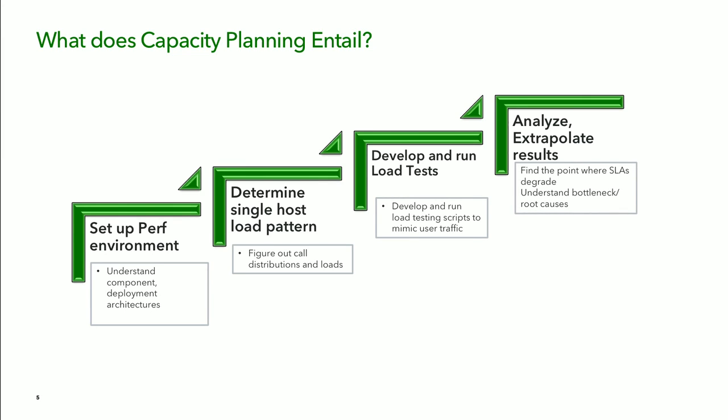The next step I want to go over is what does capacity planning actually entail. I'm trying to break it down into just four high-level simple steps and then we'll go over each in the subsequent slides. At the very first, you want to have a performance environment set up which mimics your production environment to the largest extent possible, and you're going to have to go back and understand your component and deployment architectures, which is always a useful thing to understand.